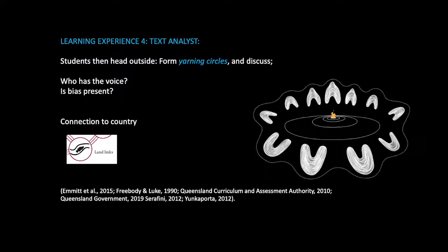In the next activity, students will take on the role of text analyst. Students will head outside, form yarn circles, and discuss these questions: In this animation, who has the voice? Is there bias present? And how does this text influence our knowledge of Aboriginal culture and language? Through this questioning process, students will begin to recognise that texts aren't neutral, but are shaped by the author's beliefs and views. These types of critical questions enable students to function as text analysts. Learning outdoors also encourages a sense of connection to country within the students, which is another of the 8 Ways learning processes.